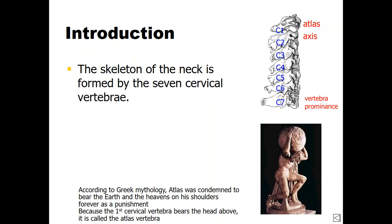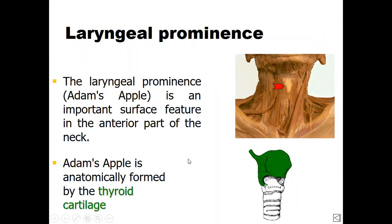We can see the prominent spinous process of C7, while the name 'atlas' for the C1 vertebra comes from Greek mythology, where Atlas is punished to bear or hold the earth over his shoulder and neck. Similarly, the head is carried on the body by the cervical vertebrae, particularly by the first cervical vertebra — so it is called the atlas. Now, regarding surface anatomy and surface landmarking in the neck.